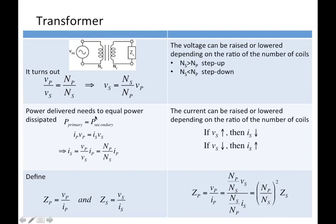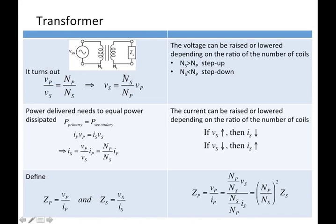The power delivered needs to equal the power dissipated — that's just a standard thing. If we put in some power on the primary side, we have to dissipate that same power on the secondary side. The current through the primary coil times the voltage across the primary coil has to equal the current through the secondary coil times the voltage across the secondary coil. Essentially, the current through the secondary coil is related to the current through the primary coil times some ratio of the number of turns — the opposite ratio compared to voltage.